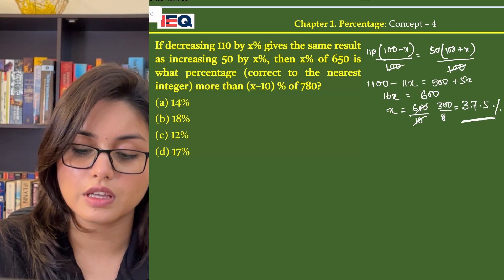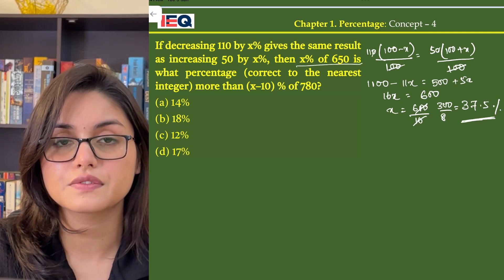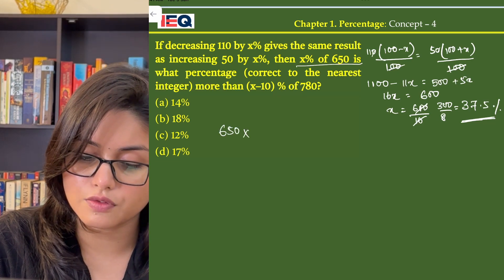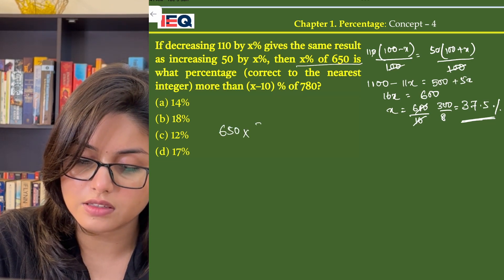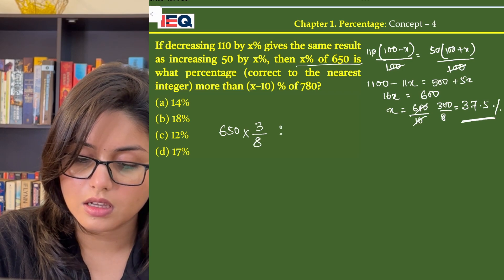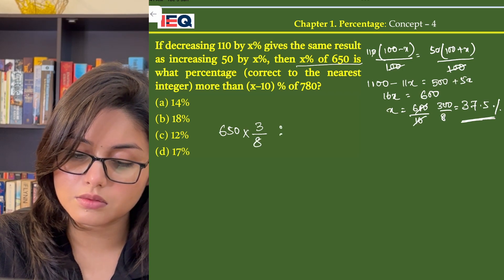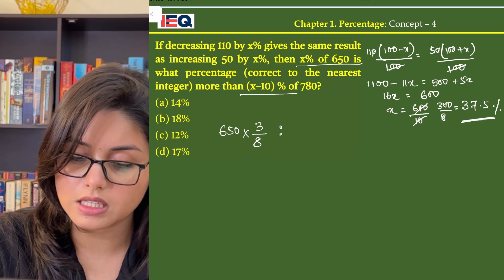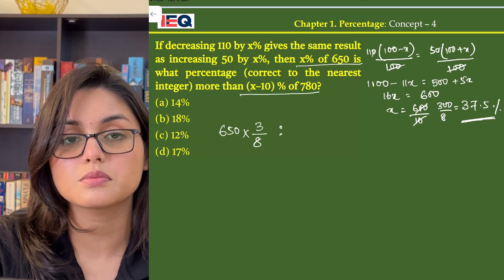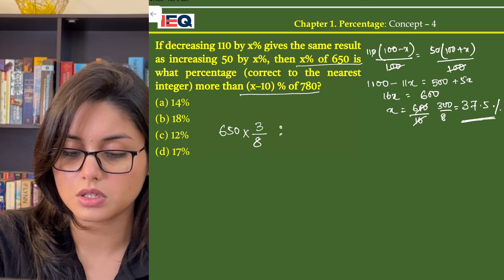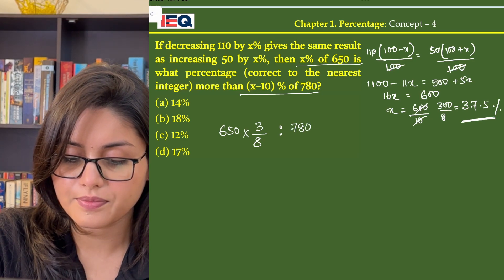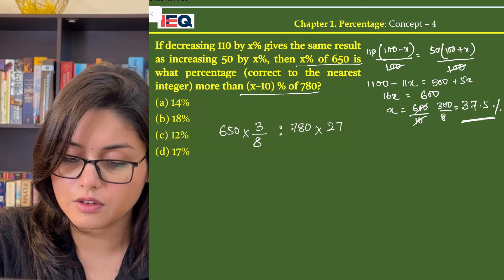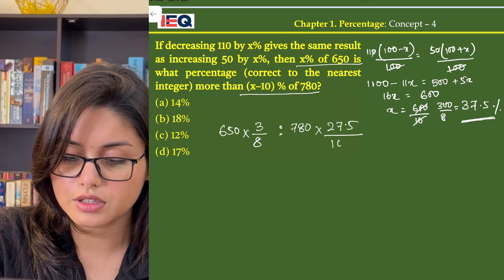Now the question asks for x% of 650, so 650 × 37.5% — we can write 37.5 as 3/8. This is to be compared with (x-10)% of 780. So (x-10)% of 780 is 780 × 27.5/100.